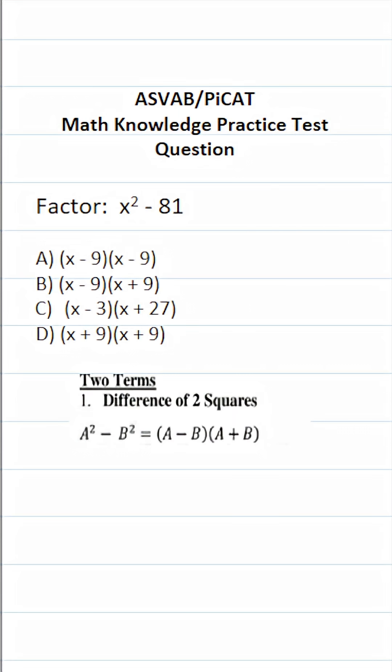This math knowledge practice test question for the ASVAB and PiCAT says factor x squared minus 81.